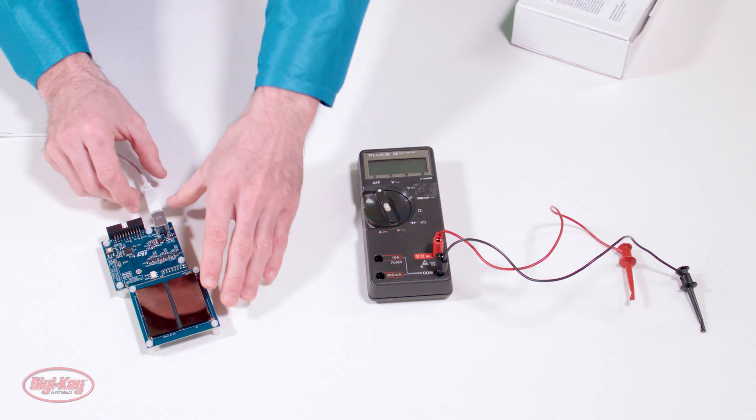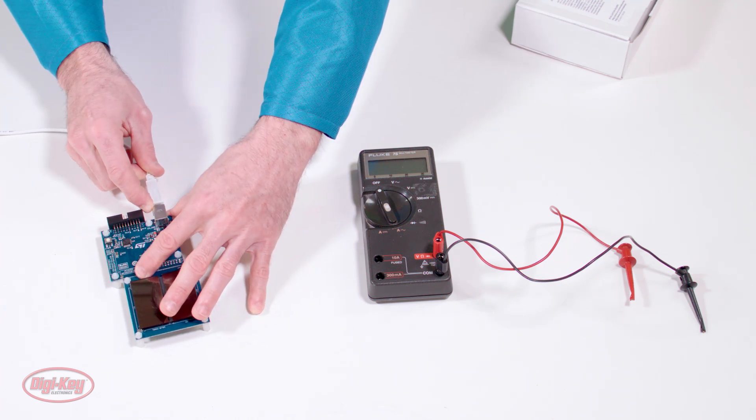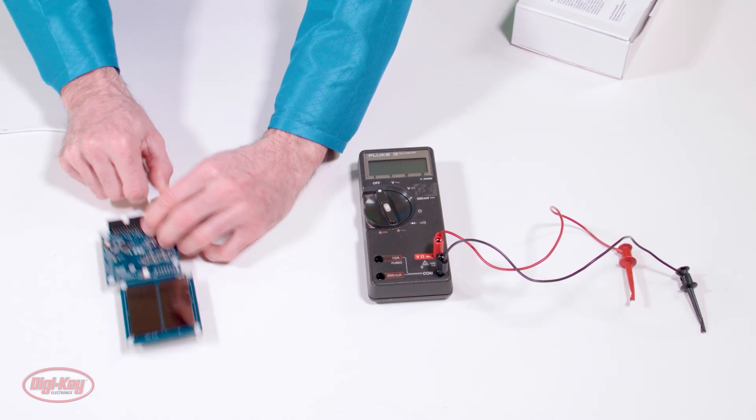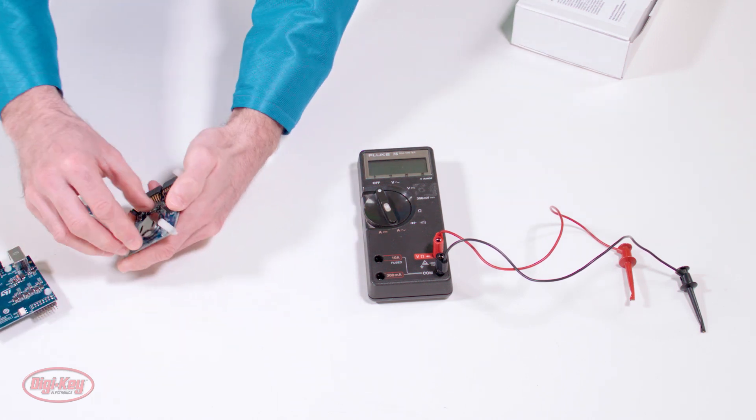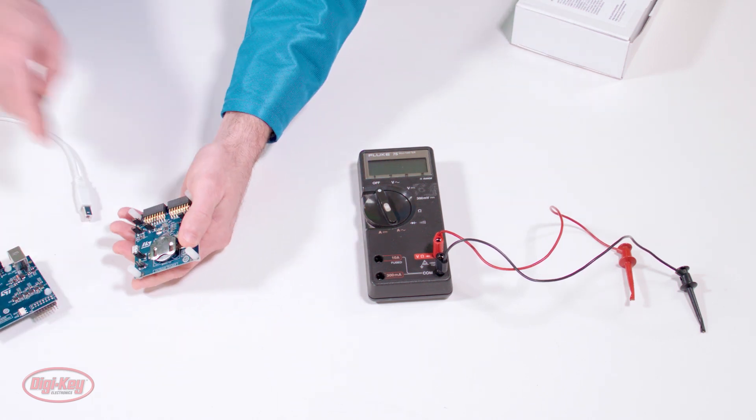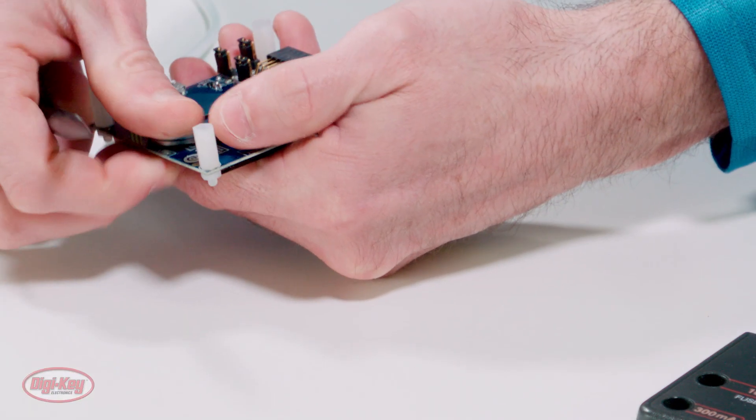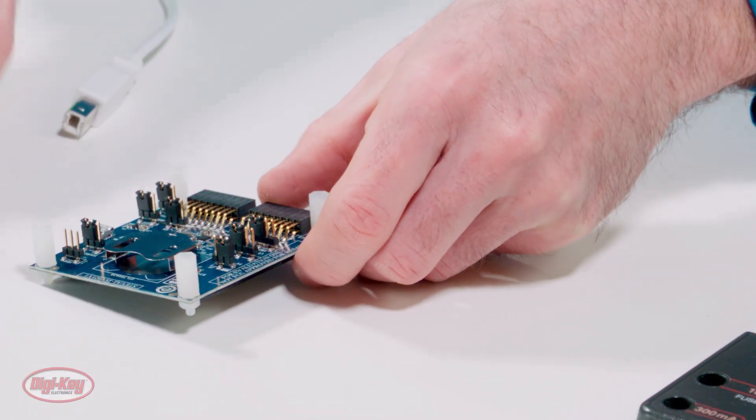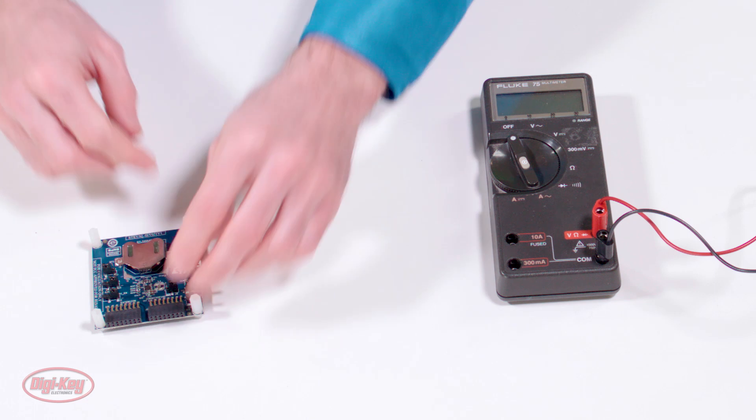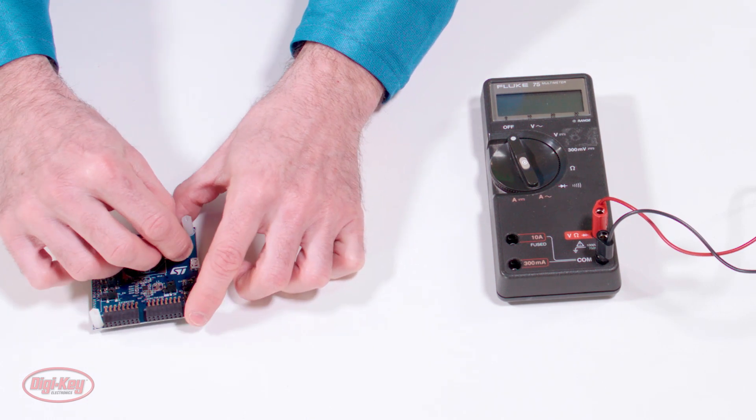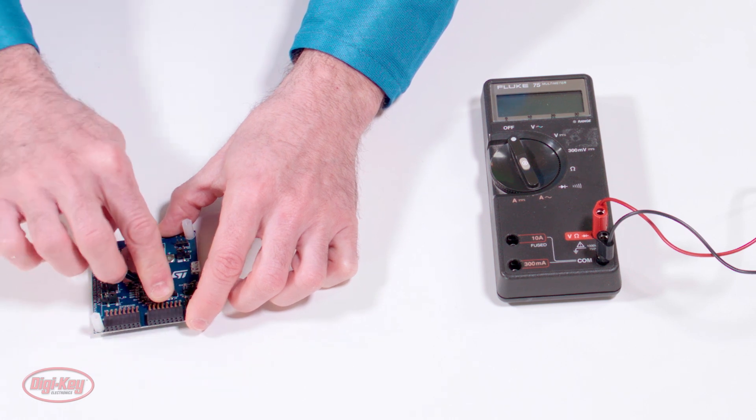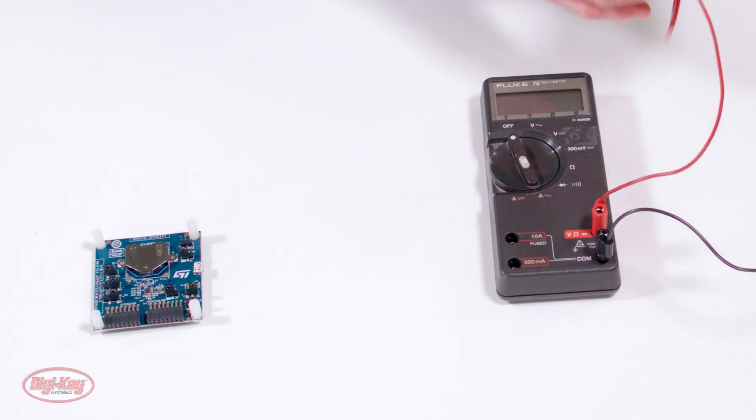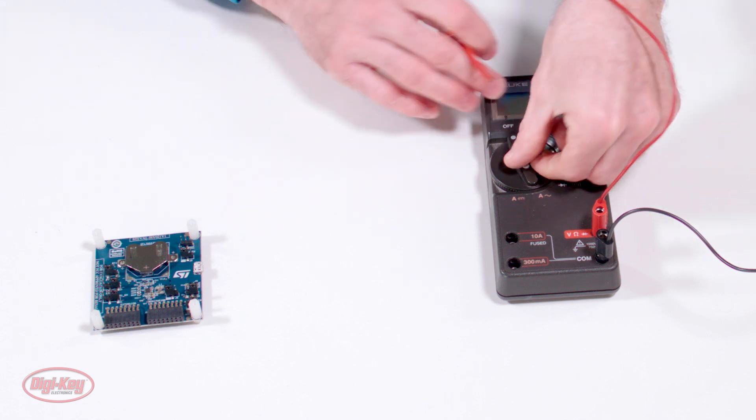So right now, I'm going to disconnect the USB cable and operate this board as a standalone. I'm going to remove the battery. So to operate as a standalone, we need to move this jumper, J5 and J6. And I will now connect the DMM.